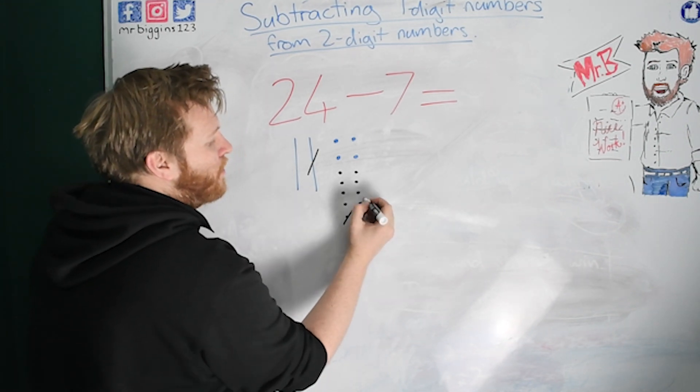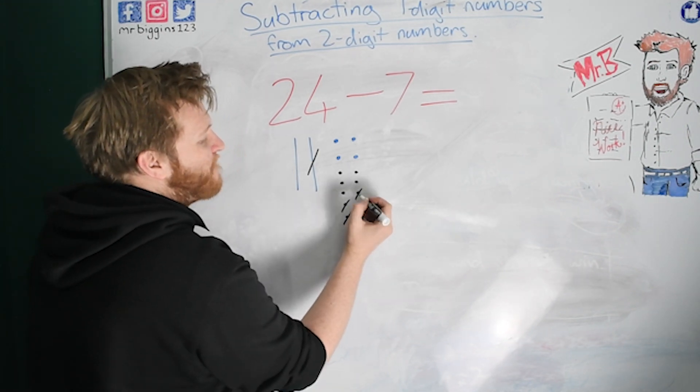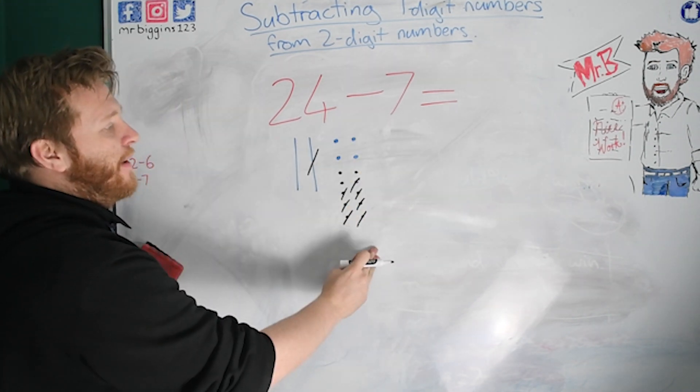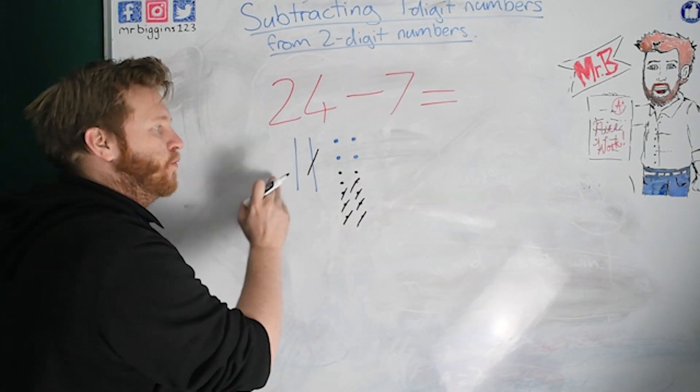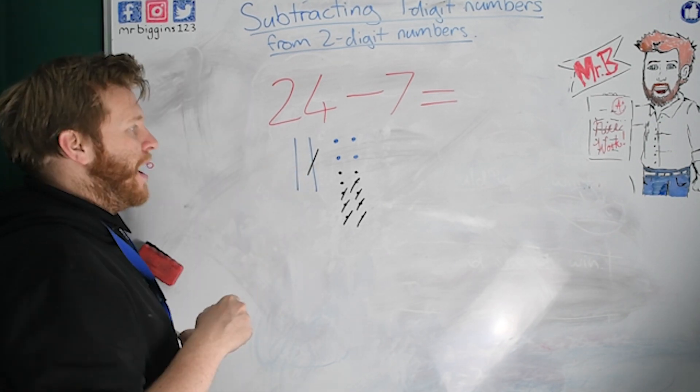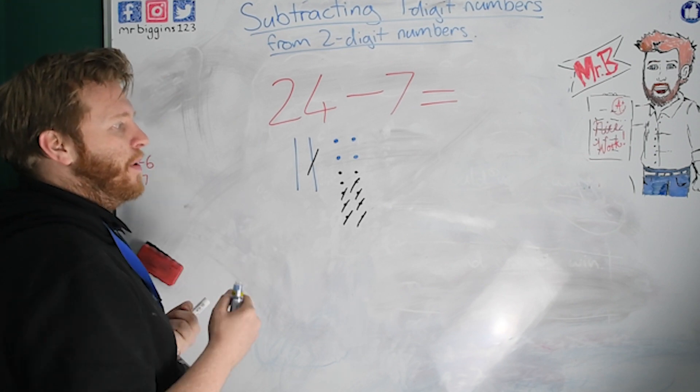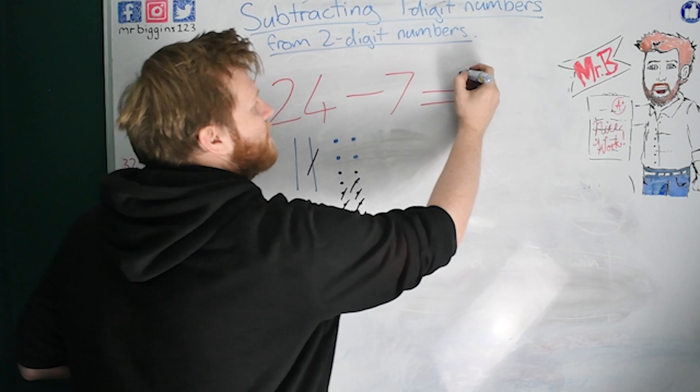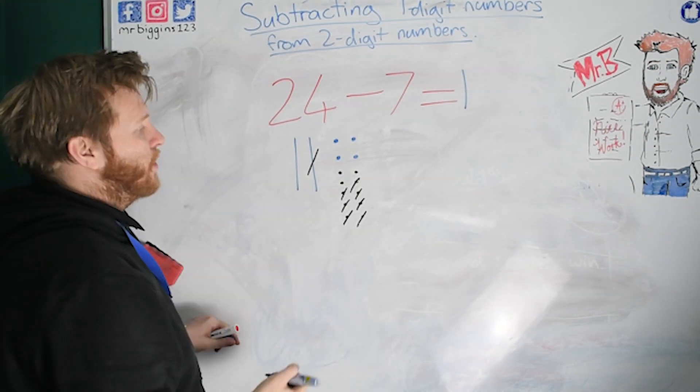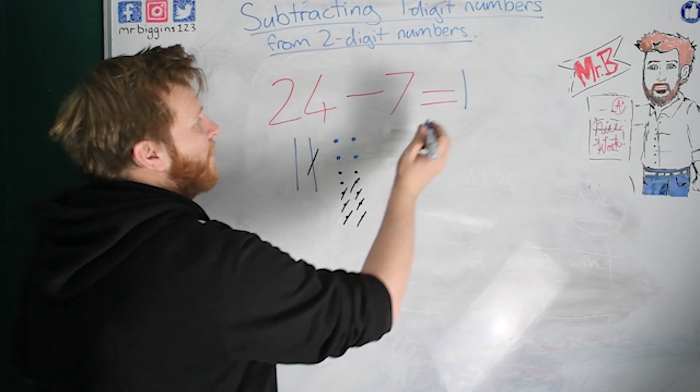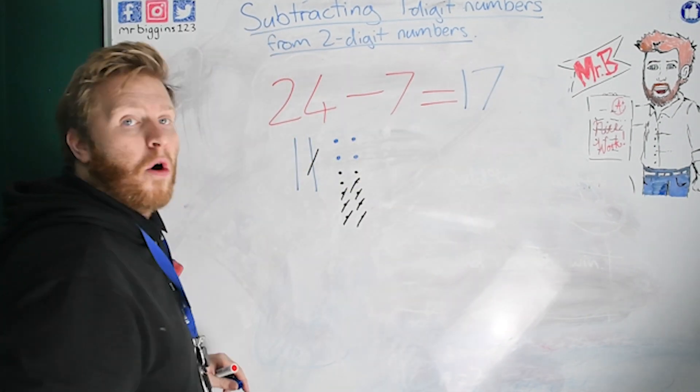We have enough ones to take away now so we can take them away, can't we? One, two, three, four, five, six, seven. So now we've taken away seven. We can count how many tens and ones we've got and get our answer. Count them. What's our answer? How many tens have we got? How many ones have we got? We've got one ten. Put that in my tens column. One, two, three, four, five, six, seven. And seven ones. Brilliant.